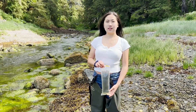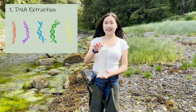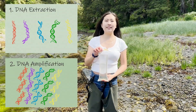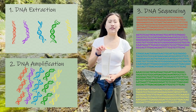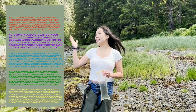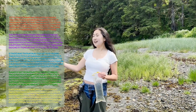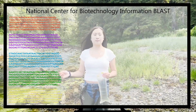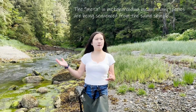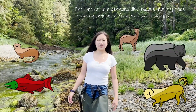First, eDNA is sampled from the environment. In the lab, we extract the DNA, amplify the barcode regions using PCR, and then use high-throughput sequencing to determine the various DNA sequences in our sample. Each sequence, called a read, is entered into an online database that matches sequence to species. What we end up with is a snapshot of the biodiversity in our environment.